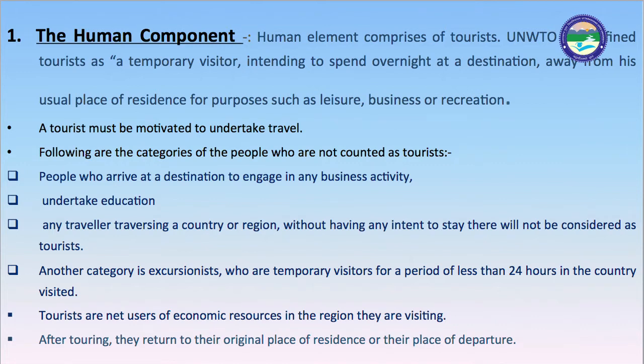The human component comprises the tourist. UNWTO has defined a tourist as a temporary visitor intending to spend overnight at a destination away from their usual place of residence for purposes such as leisure, business, and recreation. A tourist must be motivated to undertake travel. The following categories of people are not counted as tourists: people who arrive at a destination to engage in any business activity or undertake a certain kind of education.